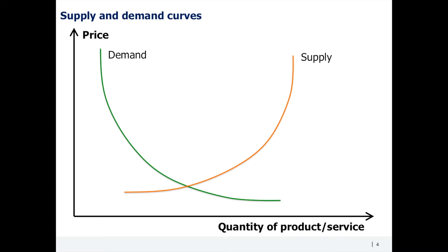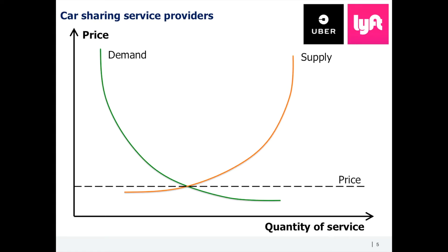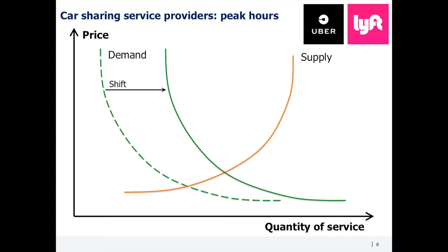For example, car-sharing companies like Uber or Lyft adjust their pricing intraday depending on the shifts of demand and supply curves. During peak hours, there are far more customers willing to get a ride, which means the demand curve usually moves to the right, as there is more demand at each pricing point.